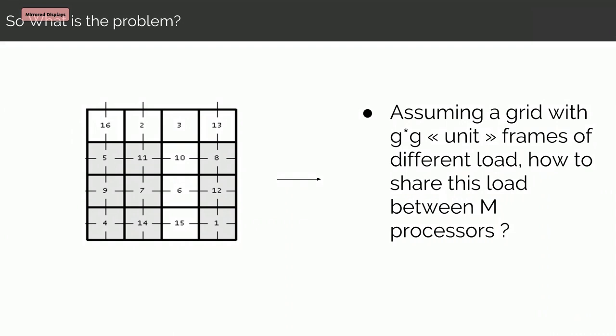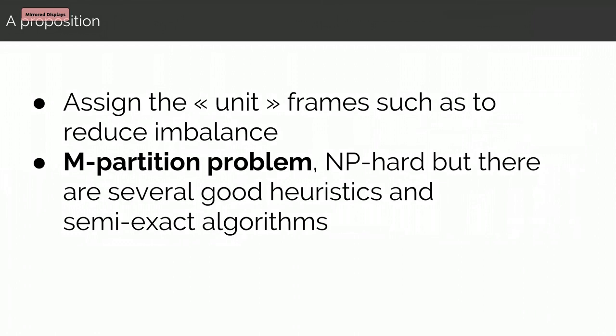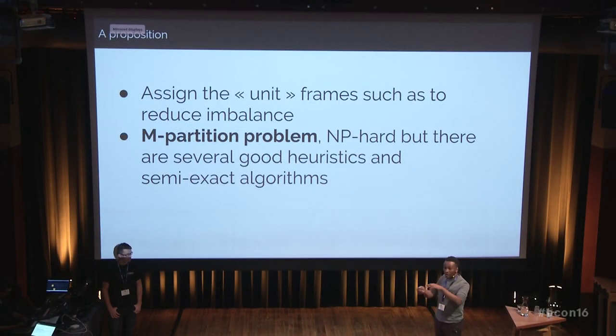Assuming a fine-grain grid decomposition and a fixed number of processors, the question is how to share the different regions between the processors. A natural solution is the m-partition problem from computer science — if you have different sub-blocks, you can formulate this load balancing problem as the m-partition problem. Even though the problem is NP-hard in the literature, it is well-studied and there are several good heuristics available.